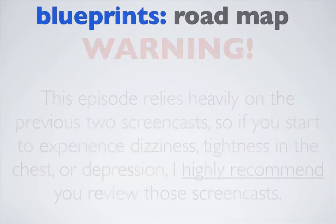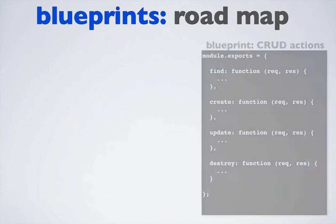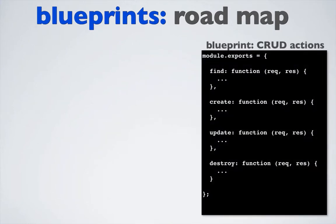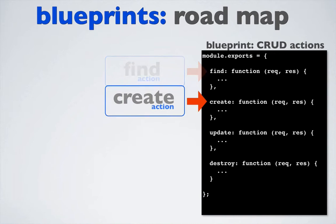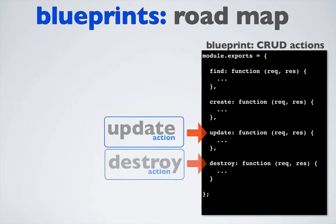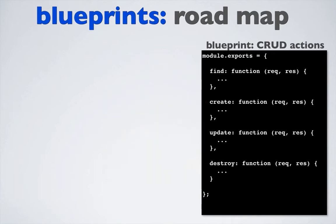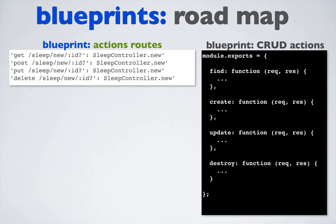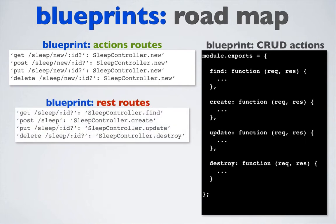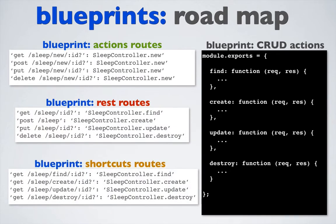Let's take a look at the roadmap of what we'll be covering in this episode. There are four pre-built blueprint actions: find, create, update, and destroy. As we'll see in a minute, these four actions map directly to the CRUD API we built in the last episode. There are also three blueprint route types: blueprint action routes, blueprint REST routes, and blueprint shortcut routes.